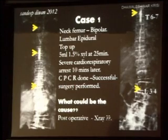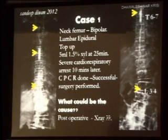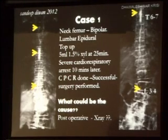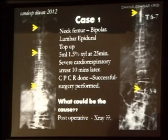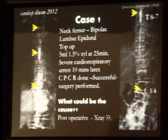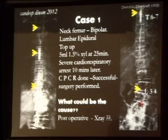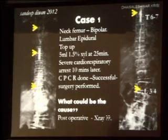Another patient for hemiarthroplasty had a successfully placed lumbar epidural, but during a top-up of 5 ml of 1.5% lignocaine, 25 minutes later the patient developed severe cardiorespiratory arrest. CPCR was successfully performed and the surgery proceeded. When I injected contrast, you can see in the lumbar area a thin contrast delineating the space, with accumulation at the thoracic level, and then spreading high up into the cervical area. So a thin line from L3-L4 goes right up to T6-7 and into the cervical area. What could this space be?